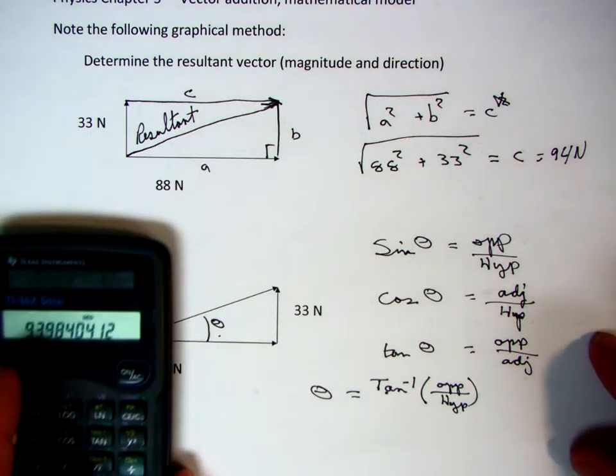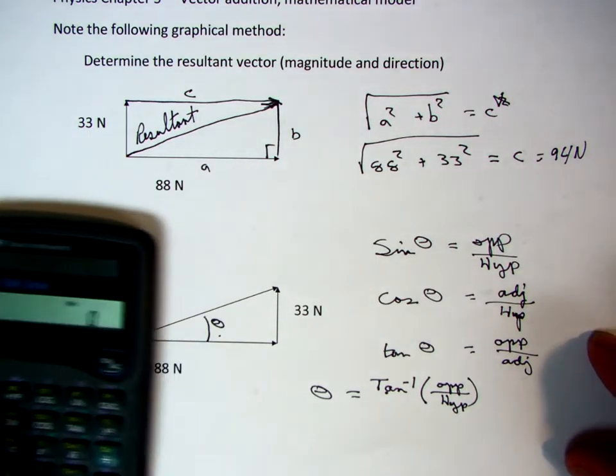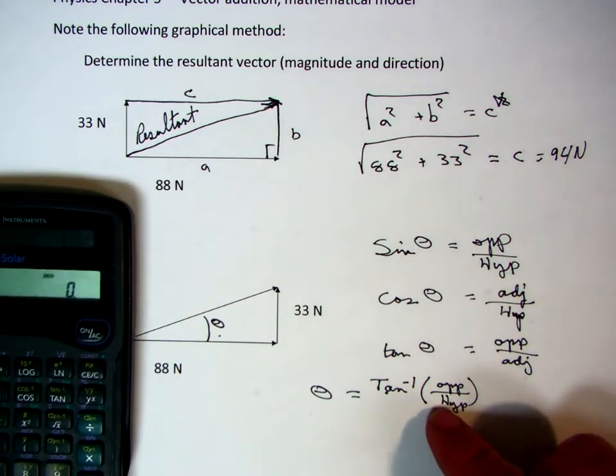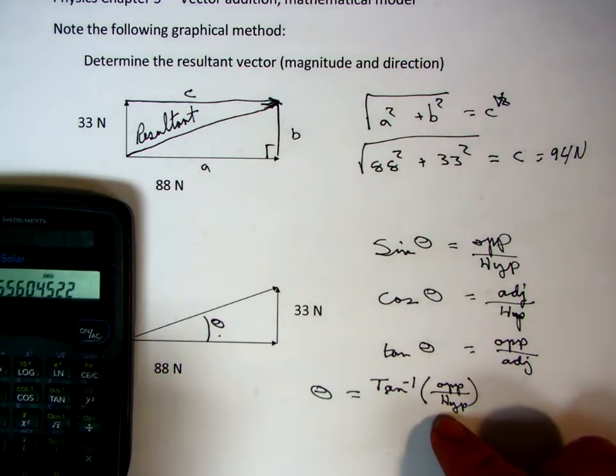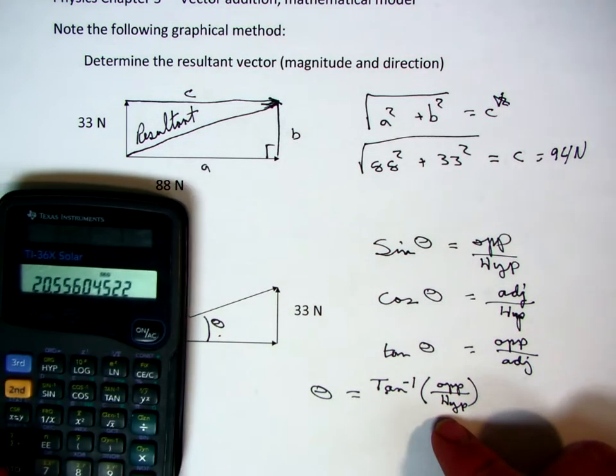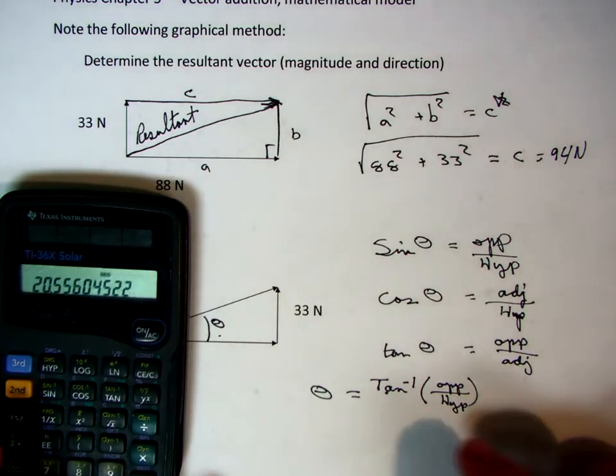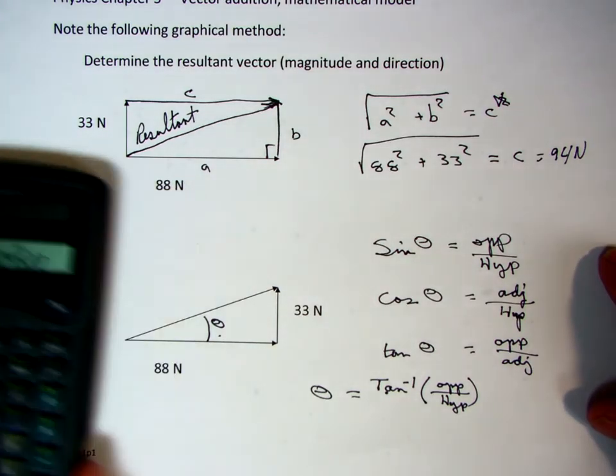So I could just take that and insert that value onto my calculator, and I'm going to go ahead and do that. I'm going to put in the 33, divided by the 88, equals, hit second function button, tangent, and it gives me the angle theta. In that instance, that is 20.1 degrees, or two significant figures, we've got a 21 degree angle.